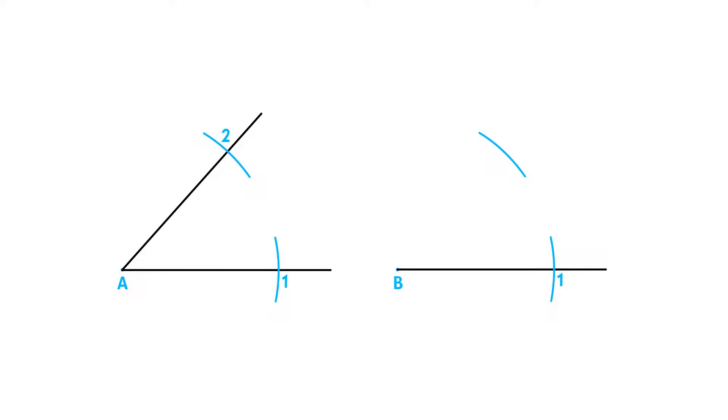To determine point 2, go to angle A and place your compass on point 1. Adjust your compass to point 2. Use this measurement on point 1 of angle B and draw an arc that will intersect our previous arc. This intersection can be labelled as point 2.